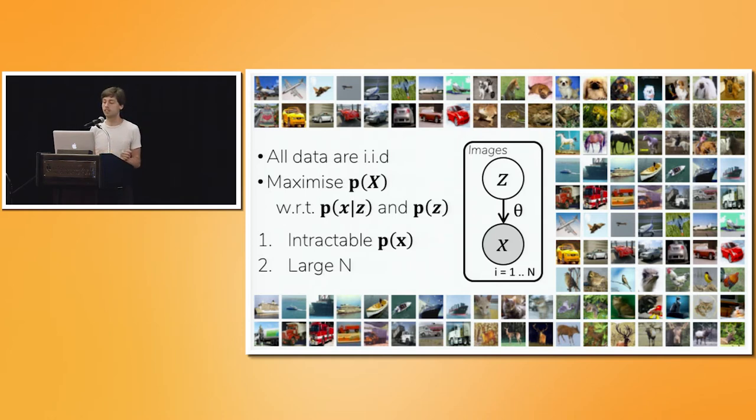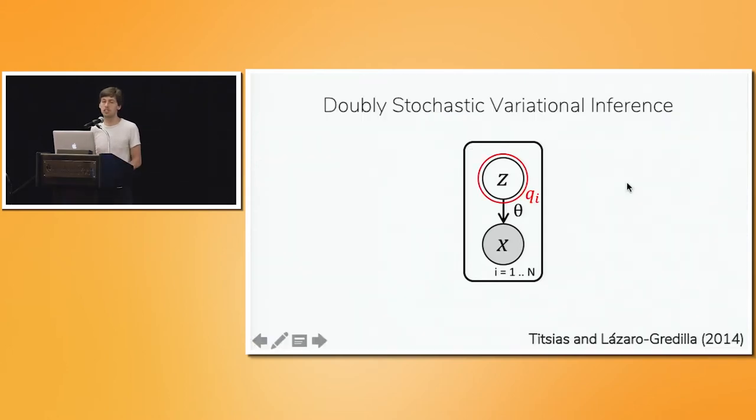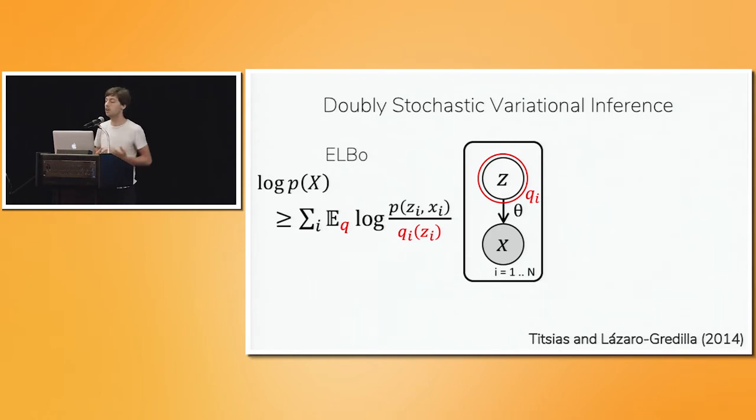And so in 2014, a few different authors independently came up with a very good solution to these two problems, which is doubly stochastic variational inference. The idea is that we define a separate variational distribution for each z, say a Gaussian distribution, to serve as an approximate posterior. And we can use that approximate posterior to construct a lower bound on the marginal likelihood of the entire data set, the so-called evidence lower bound, or ELBO.